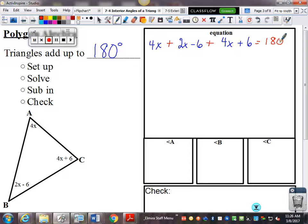Then, I need to combine like terms. So, 4x plus 2x plus 4x makes 10x. Now, interesting thing happens here. It's not going to happen on all your problems, but it happens on this one. When I have a minus 6 and a plus 6, they actually cancel each other out. So, I get 180.